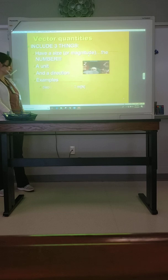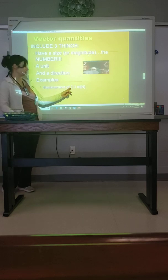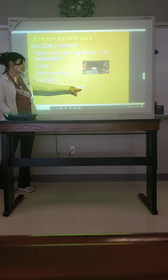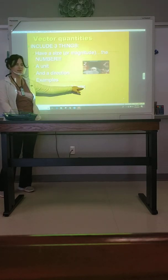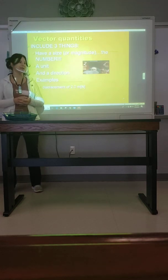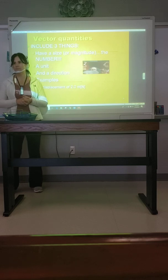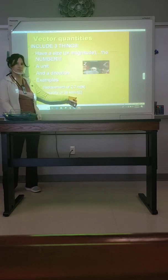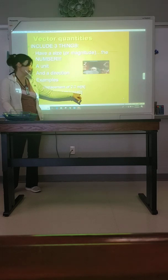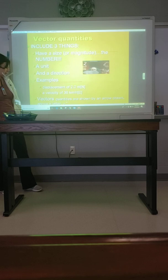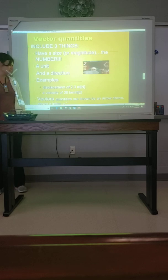Some examples: when talking about displacement, it might be two meters north — notice the m is for meters and North is capitalized. North, south, east, and west are typically capitalized. Velocity could be 30 kilometers per hour going east. Vector quantities are shown by an arrow drawn above a letter.